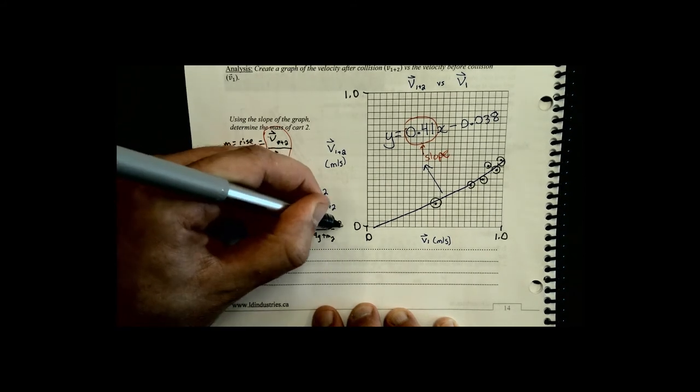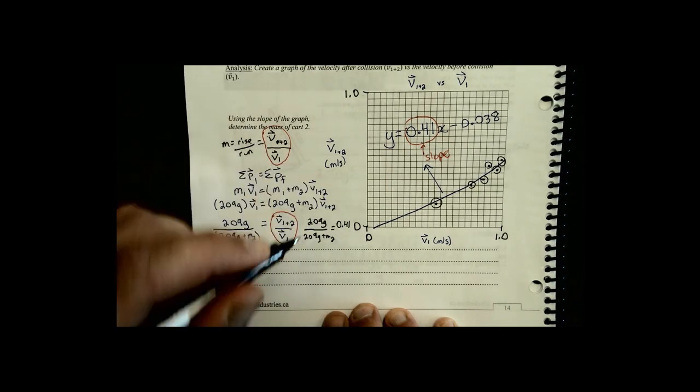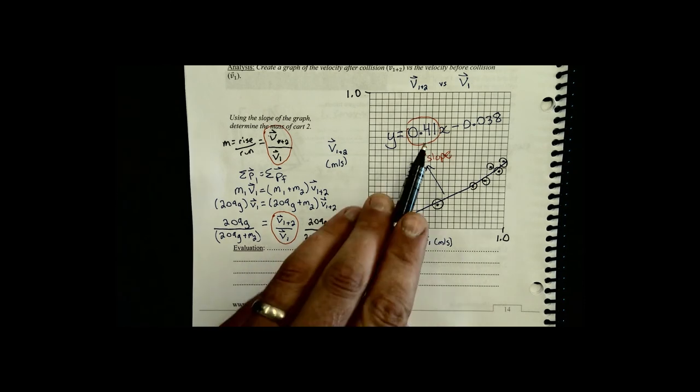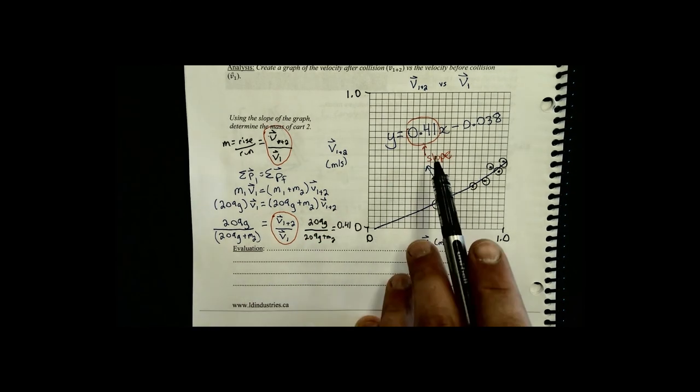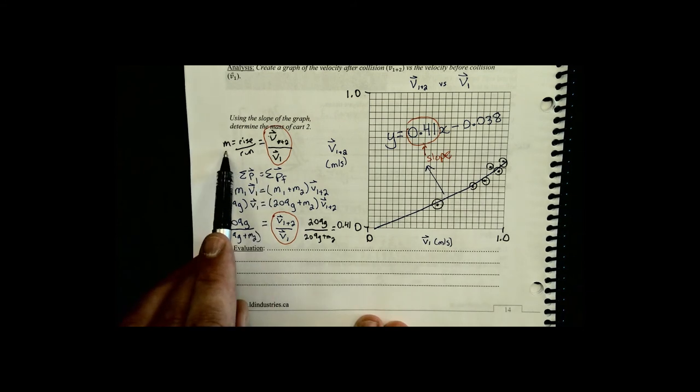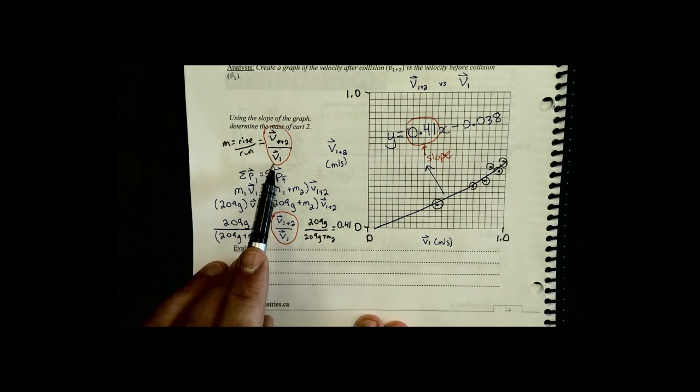So 209 grams over 209 grams plus m2 equals 0.41. And the reason I could substitute in v1 plus 2 over v1 with 0.41 is because 0.41 is the slope of the line. And we know the slope of the line is the same as v1 plus 2 over v1.